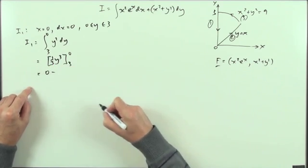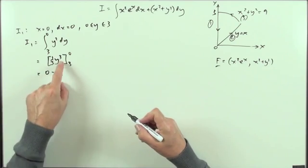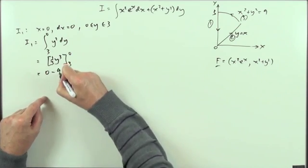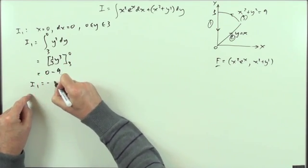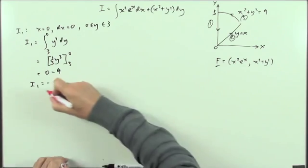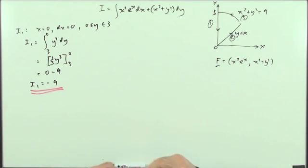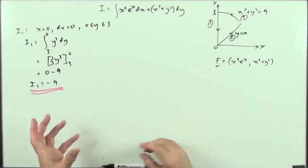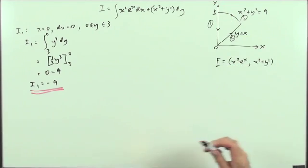Evaluating: the value at zero is zero, the value at three gives three cubed divided by three, which is three squared equals nine. So I1 is going to be negative nine. Dropping down the y-axis, I've picked up negative nine.